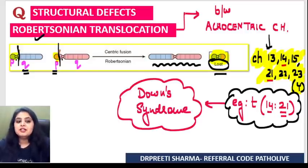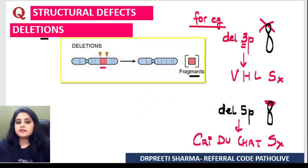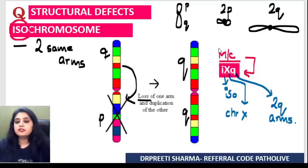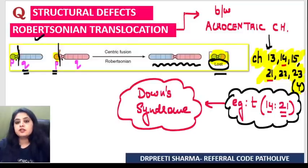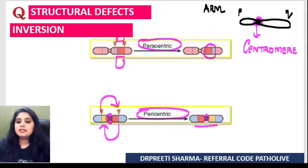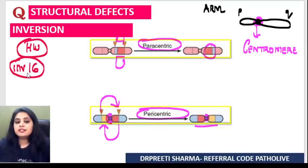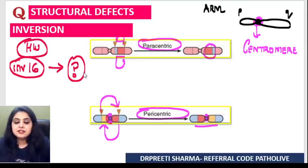I think I've given you examples for most of them. For deletion: deletion 3P and 5P. For ring chromosome: Turner's syndrome. For isochromosome: iXQ. For Robertsonian translocation: acrocentric chromosomes. For inversion, I did not give you any example. So your homework: in which condition do we see inversion 16? Type out and let me know.